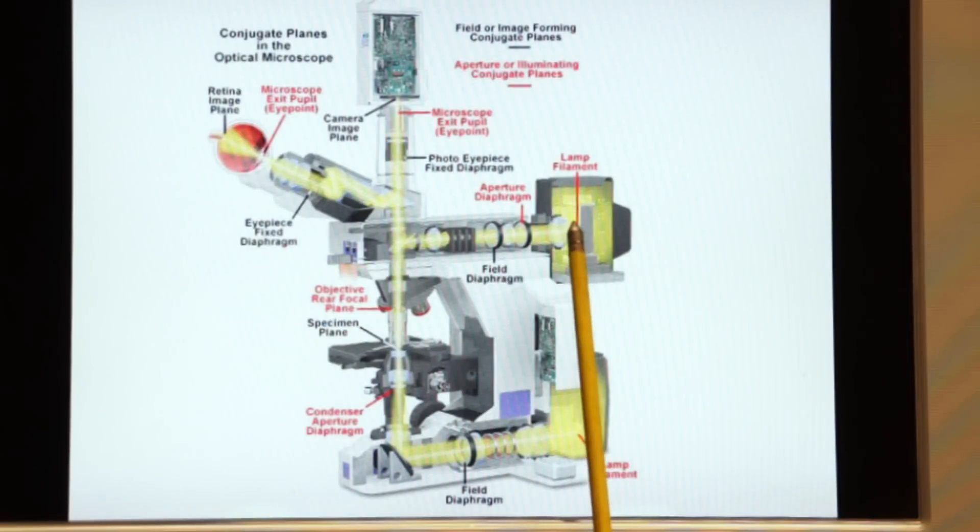Here you can see it traveling through a field diaphragm. Again we can close this diaphragm down and align it for alignment purposes. The light then travels through what we call a barrier filter.